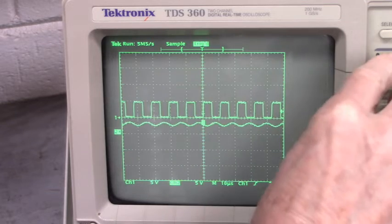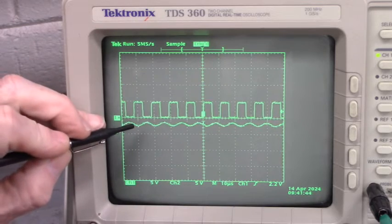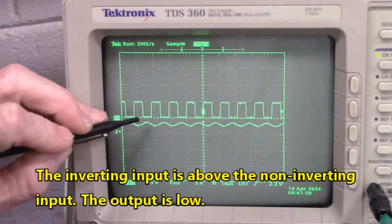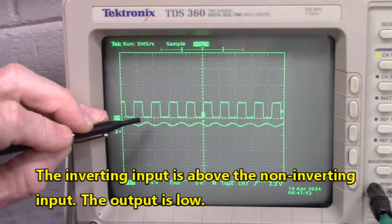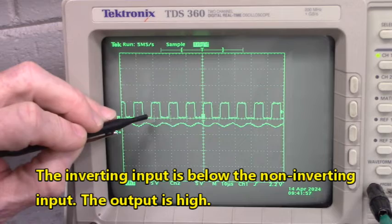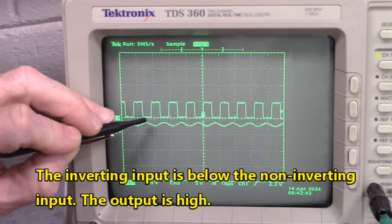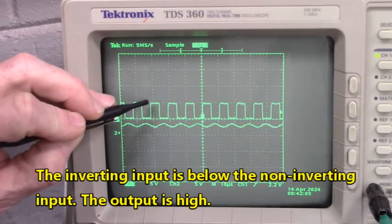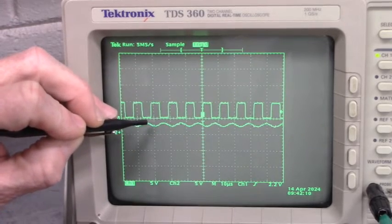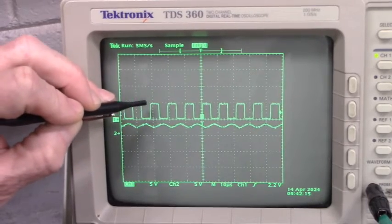Now, let's bring channel 2 up close to the square wave. Okay. Can you see that? When the non-inverting input is above 2.5 volts of the inverting input, the output is low. So, when the non-inverting input is lower than the 2.5 volts on the non-inverting input, the output is high.